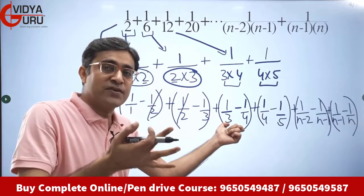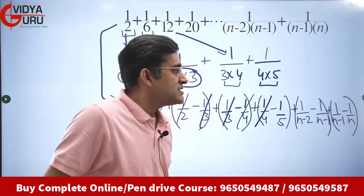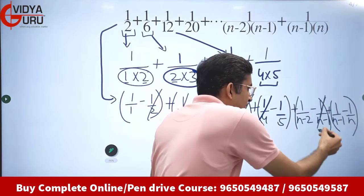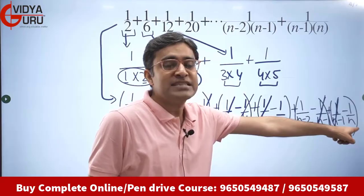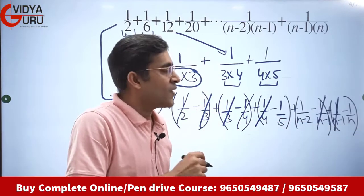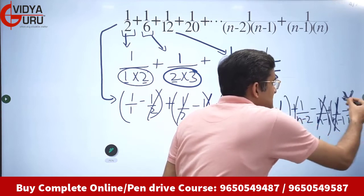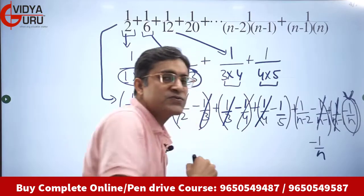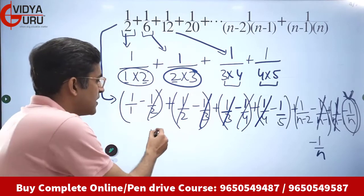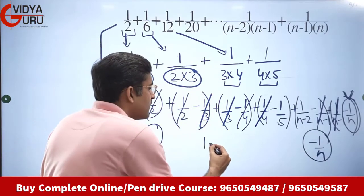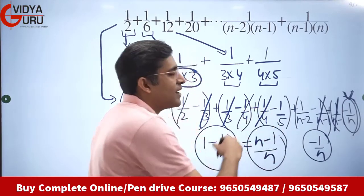Similarly, −1/(n−1) gets cancelled by +1/(n−1) which comes next. That is where the series ends. From the last term, −1/n remains. From the first term, 1 remains. So the answer is 1 − 1/n, which simplifies to (n−1)/n.